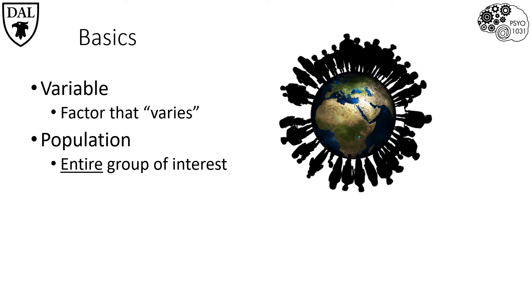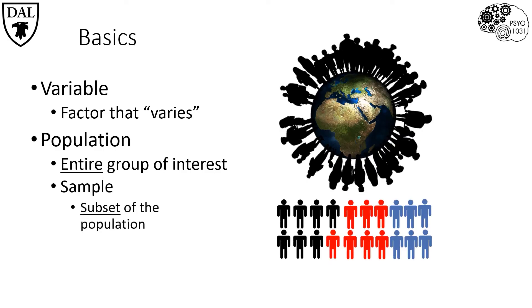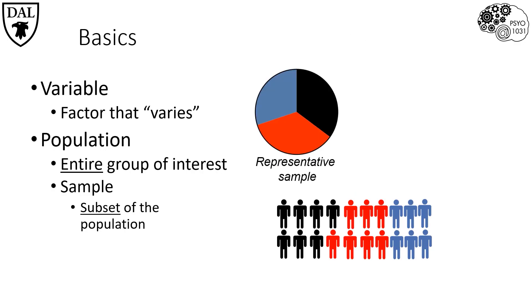So to make things more manageable, we can instead take a sample or subset of the population of interest. The important thing is to make sure that the sample is representative of the population, meaning that the sample has the same overall makeup as the larger population.